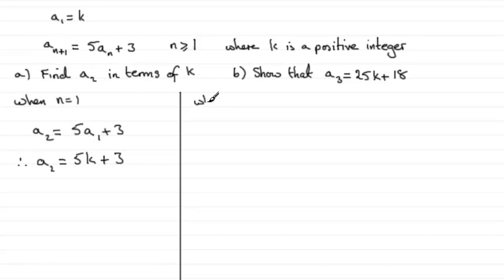So we'll just say here when n equals 2, we get a₃ is equal to 5 lots of a₂ plus 3. But what is a₂?